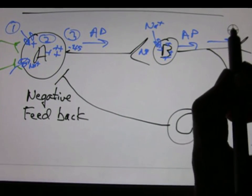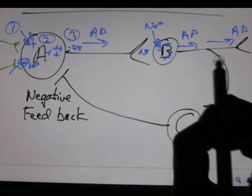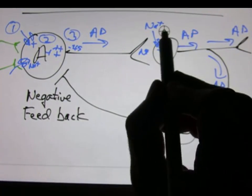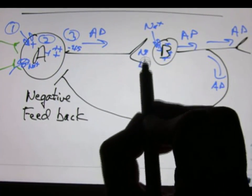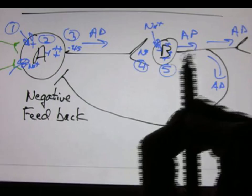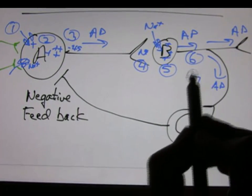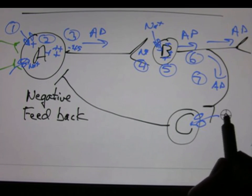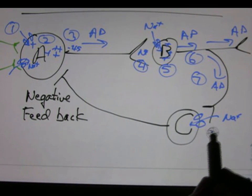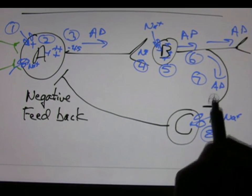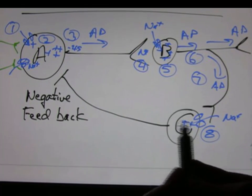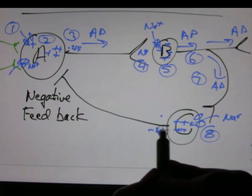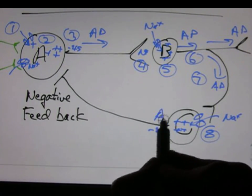That action potential goes on to do whatever it's going to do here, but of course the action potential also goes here. And where are we? We're at 4, 5, 6, 7. And we again allow sodium in. Remember that's excitatory to neuron C. We get to minus 45. We get a new action potential.